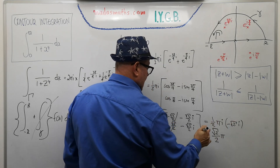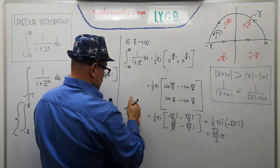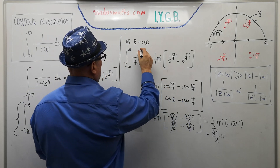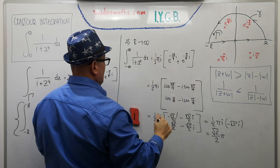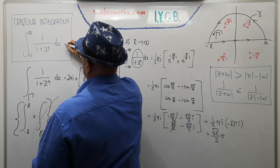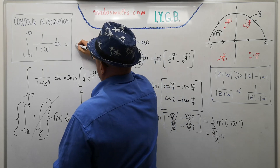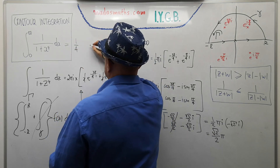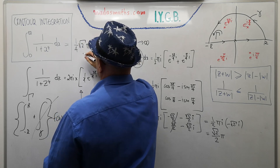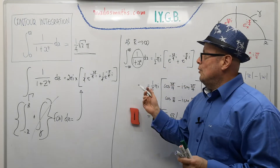Combining: ½πi × (−i√2) = ½π√2, since i × (−i) = 1. This is the integral from −∞ to ∞. Since the integrand is even, the integral from 0 to ∞ is half of this. Therefore, the answer to our integral is ¼ × √2 × π = π√2/4.